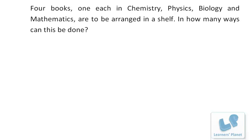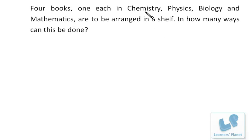Gradually the concepts of permutation, combination, and principle of counting will be cleared in your mind. Don't make any discrimination among these terms — just apply simple mathematical common sense and you'll be able to do the problems. Now, four books — one each in chemistry, physics, biology, and mathematics — are to be arranged on a shelf. In how many ways can this be done? If you start thinking about whether it is permutation, combination, or simple arrangement, it will be confusing.